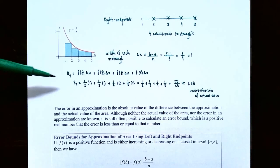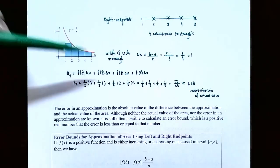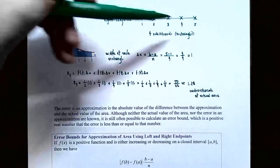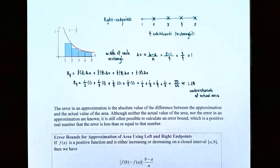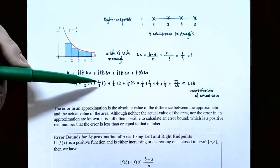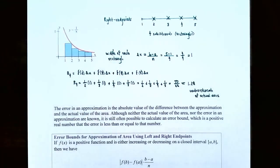The approximation using right-hand endpoints is denoted R sub 4. The first rectangle's height is at x equals 2, so f of 2 times delta x, plus f of 3 times delta x, plus f of 4 times delta x, plus f of 5 times delta x. Plugging into f of x equals 1 divided by x: one-half times 1, plus one-third times 1, plus one-fourth times 1, plus one-fifth times 1. Adding these gives 77 divided by 60, which is approximately 1.28.